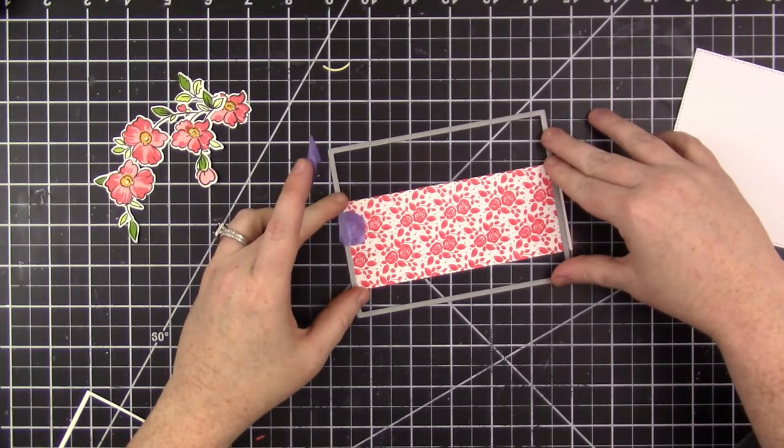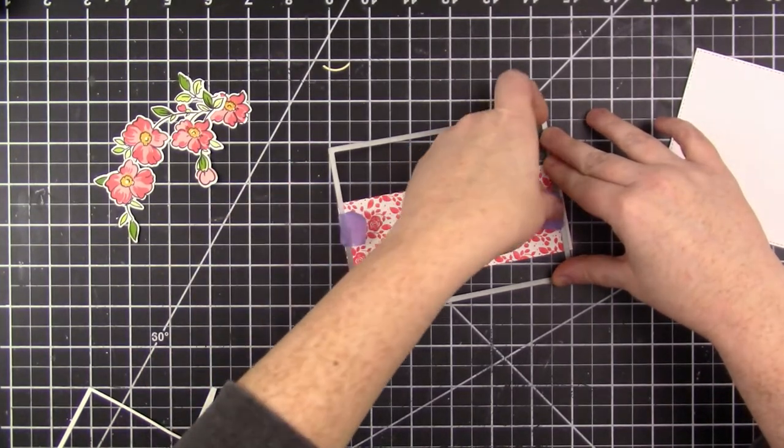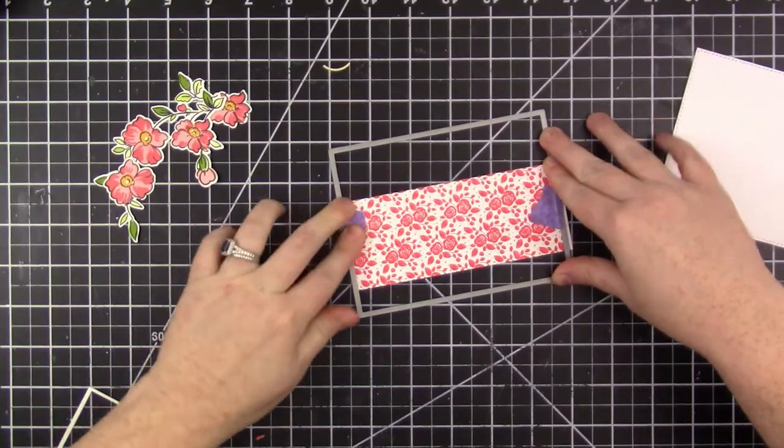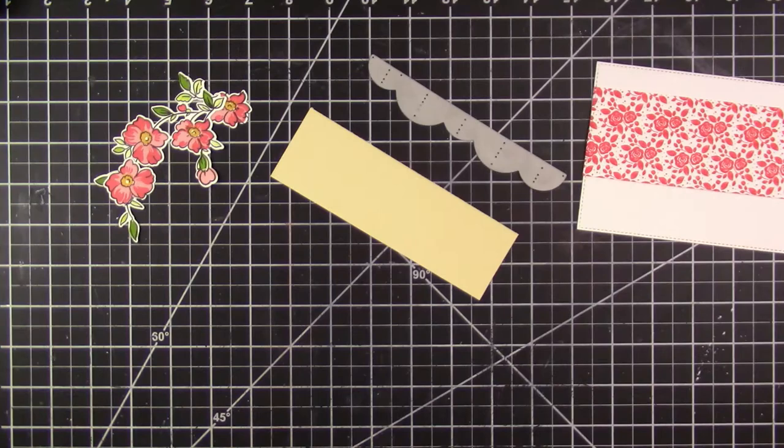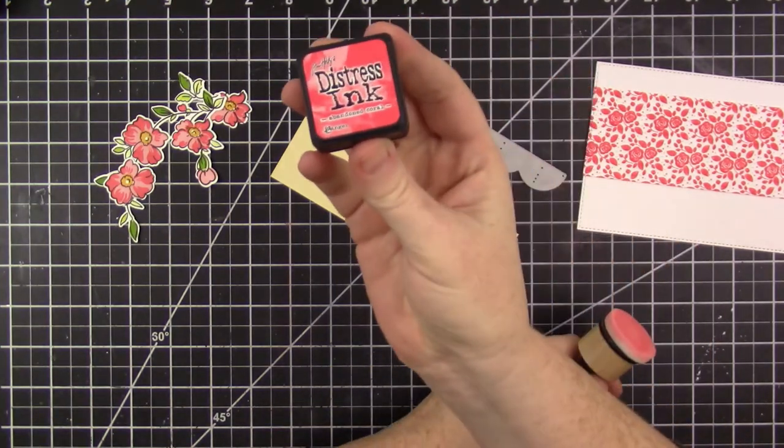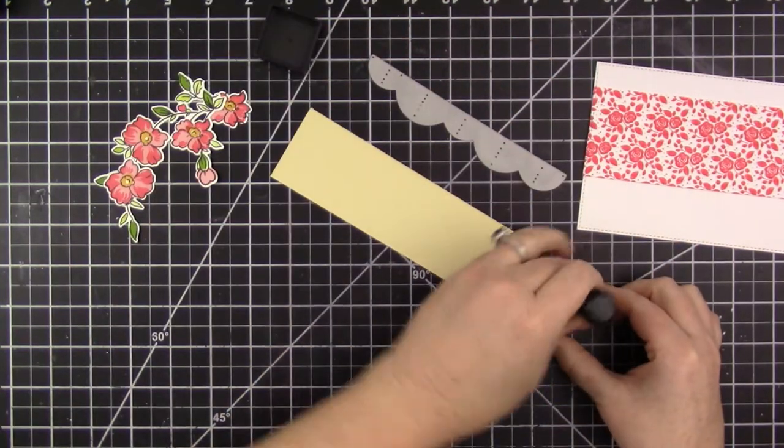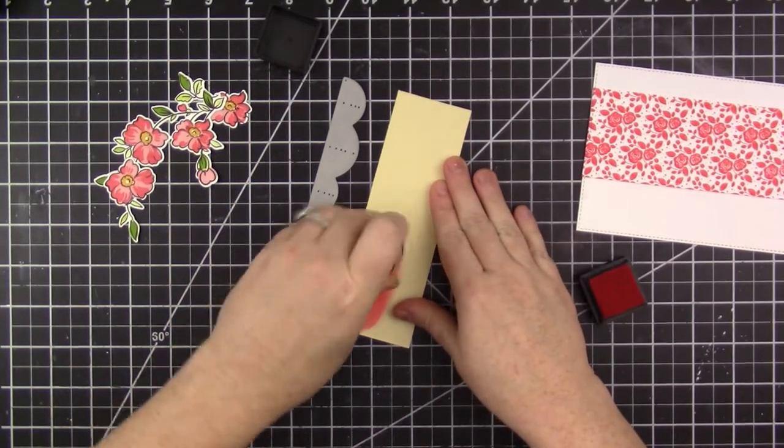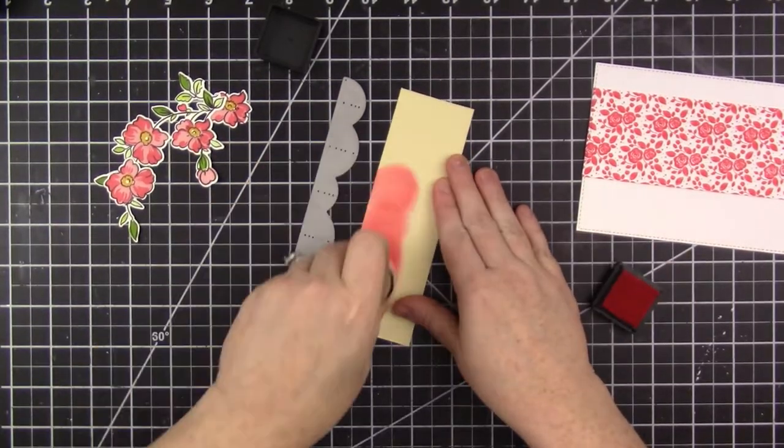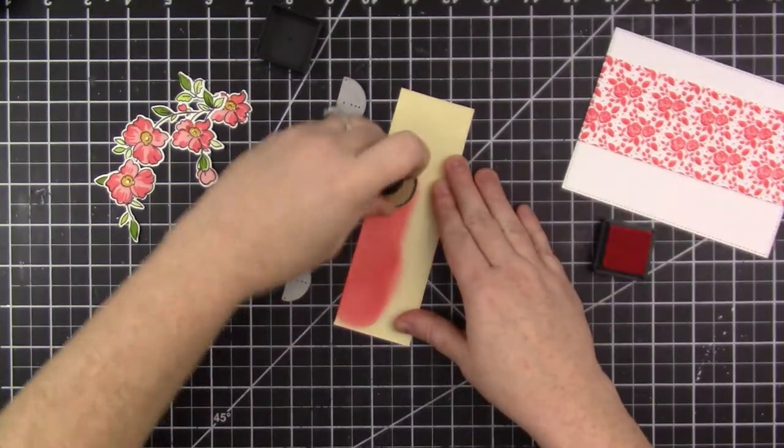I also want to incorporate this Sunshine Border die from Simon Says Stamp onto my card, and I want it to match the floral background. Since I don't have a piece of cardstock in the Abandoned Coral color, I decided I'll just create my own by coloring another piece of cardstock with that ink and an ink blending tool.